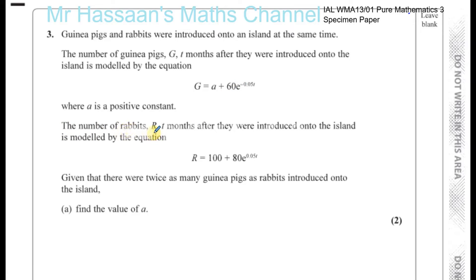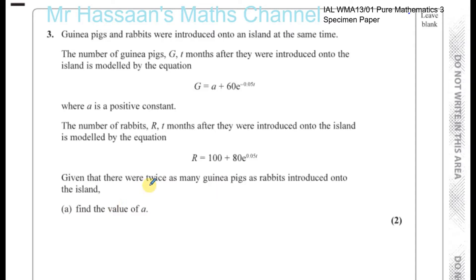The number of rabbits, r, t months after they were introduced onto the island is modelled by the equation r equals 100 plus 80 times e to the power of 0.05t. Given that there were twice as many guinea pigs as rabbits introduced onto the island, find the value of a.